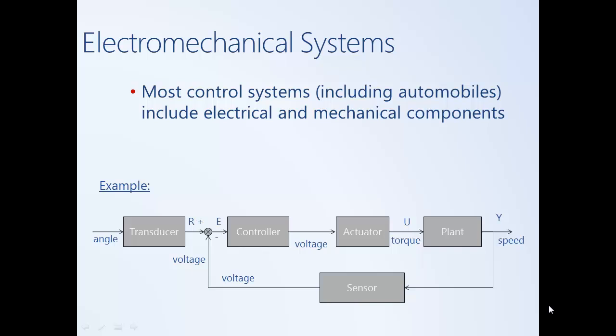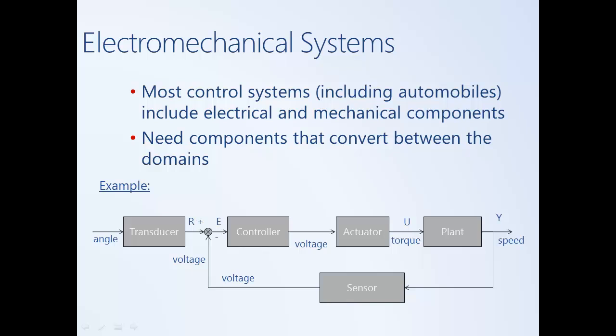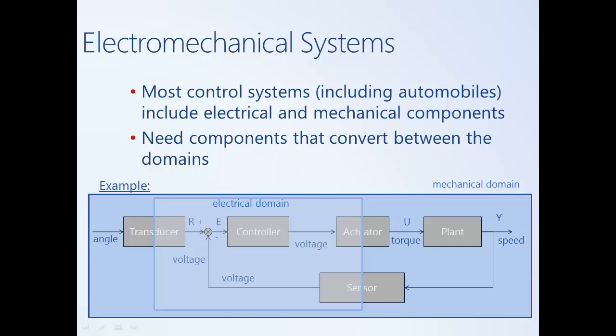Most control systems, including automotive control systems, include electrical and mechanical components. Here in the figure shown, we have an example feedback system with the typical elements of a control system. There are components in the electrical domain and components in the mechanical domain, and we need components that are able to convert between these two domains. For example, the controller itself is usually implemented in the electrical domain, either as a circuit or in software, while the system being controlled may be mechanical.